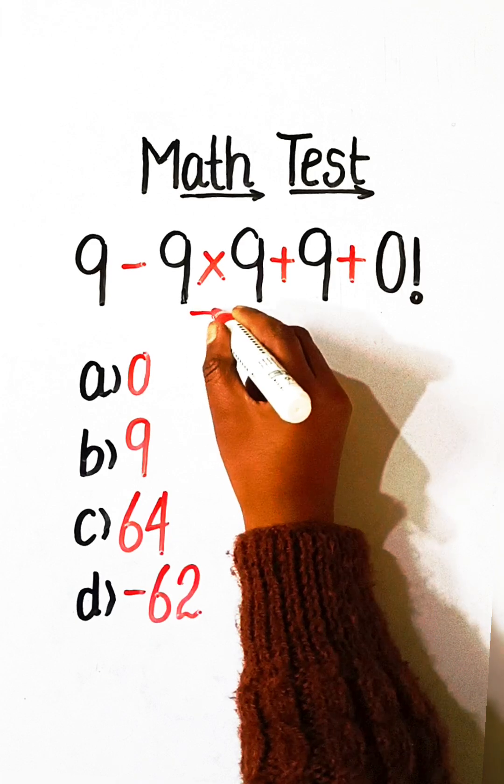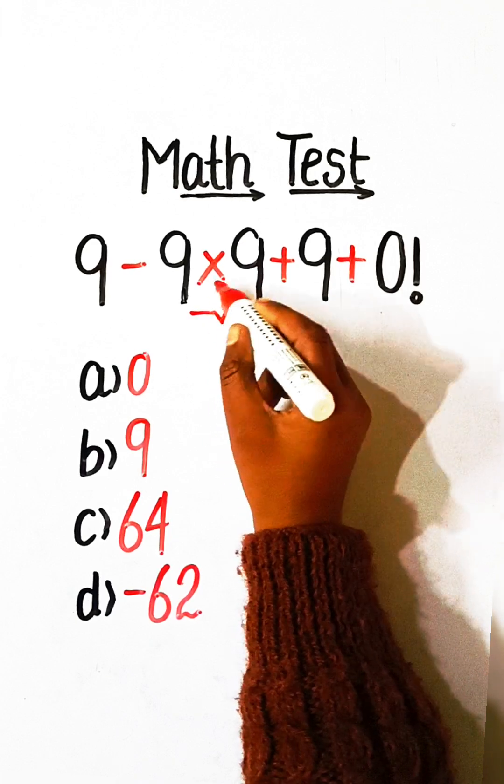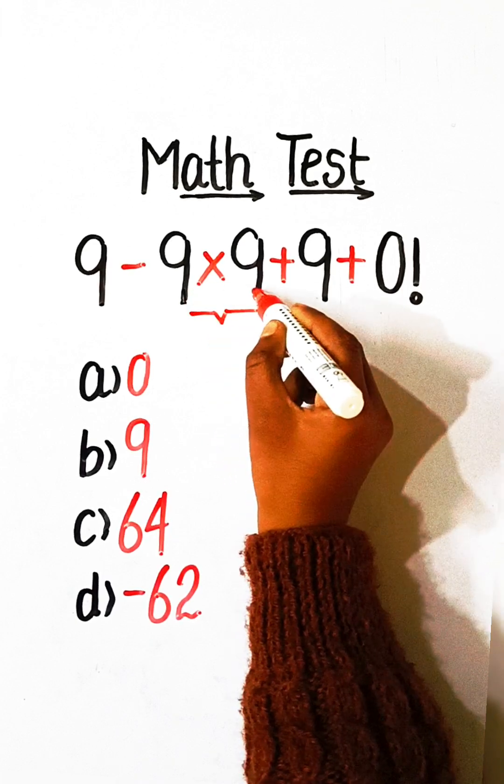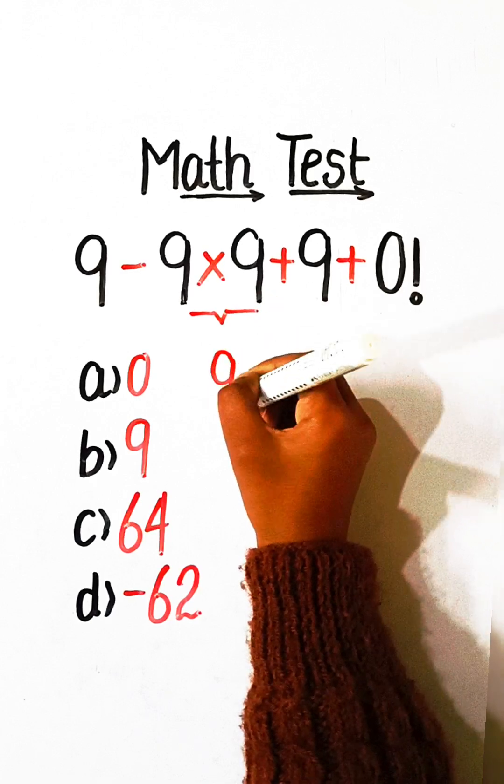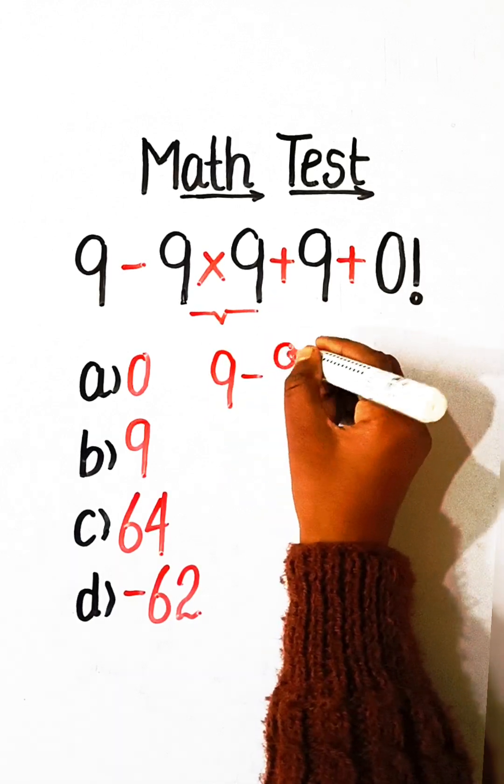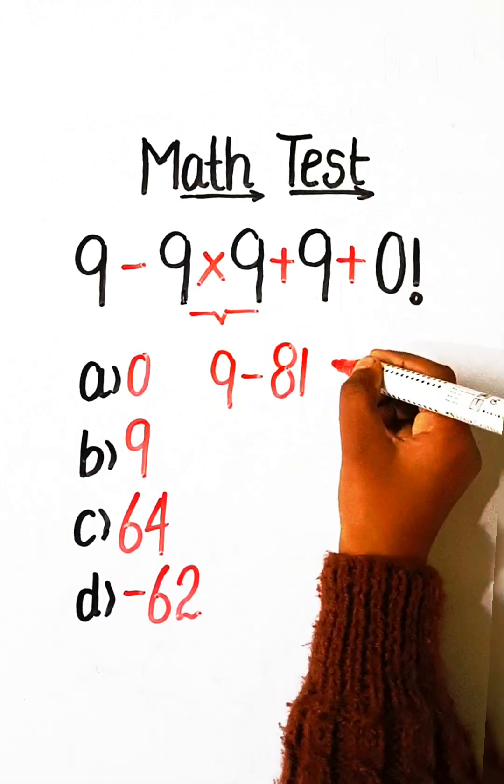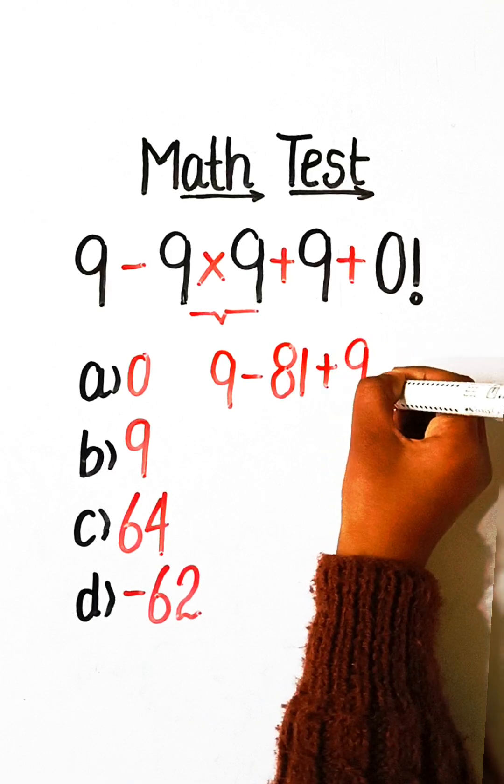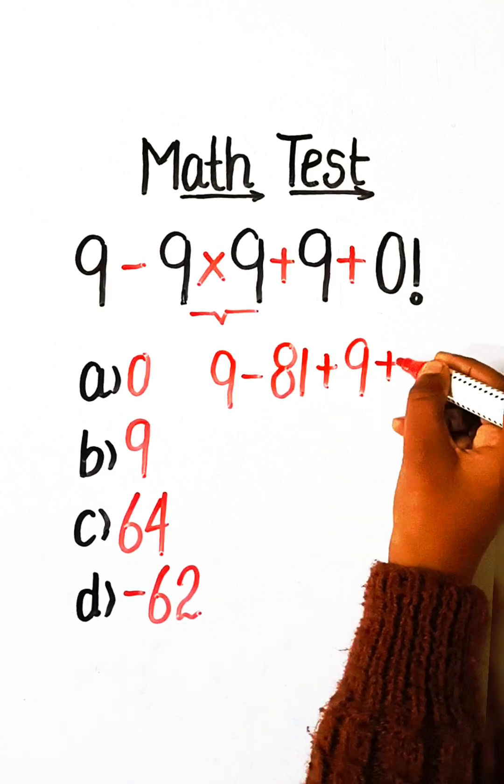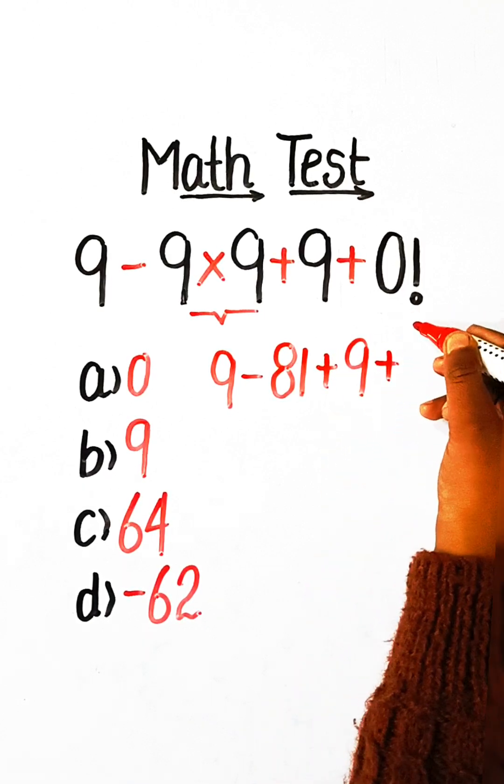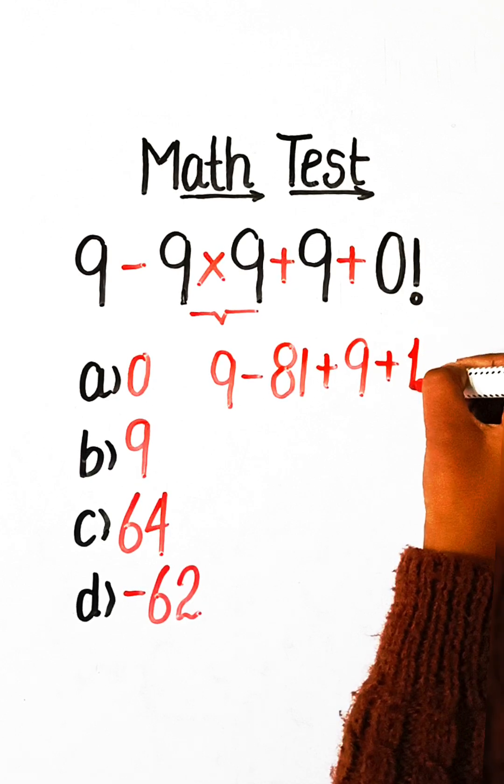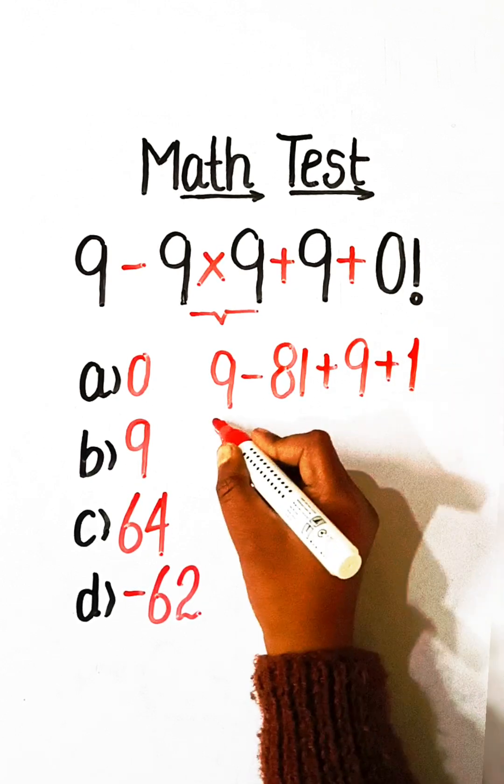We have to firstly solve 9 multiply by 9, the multiplication part. 9 minus 81 plus 9 plus the value of 0 factorial is 1.